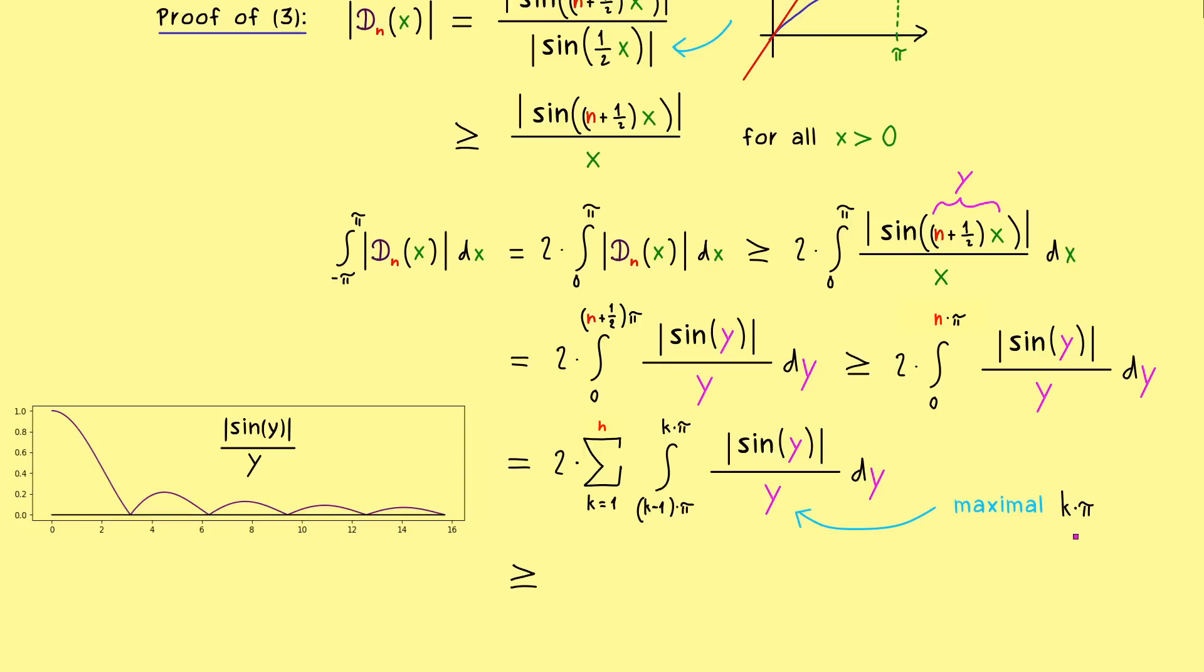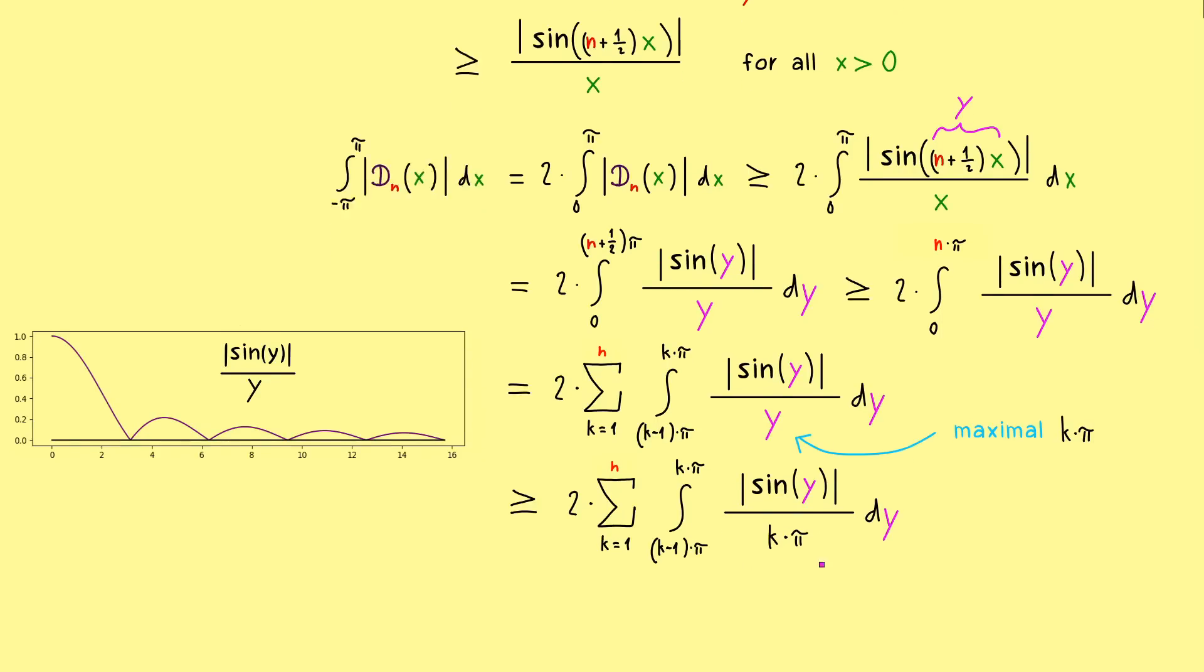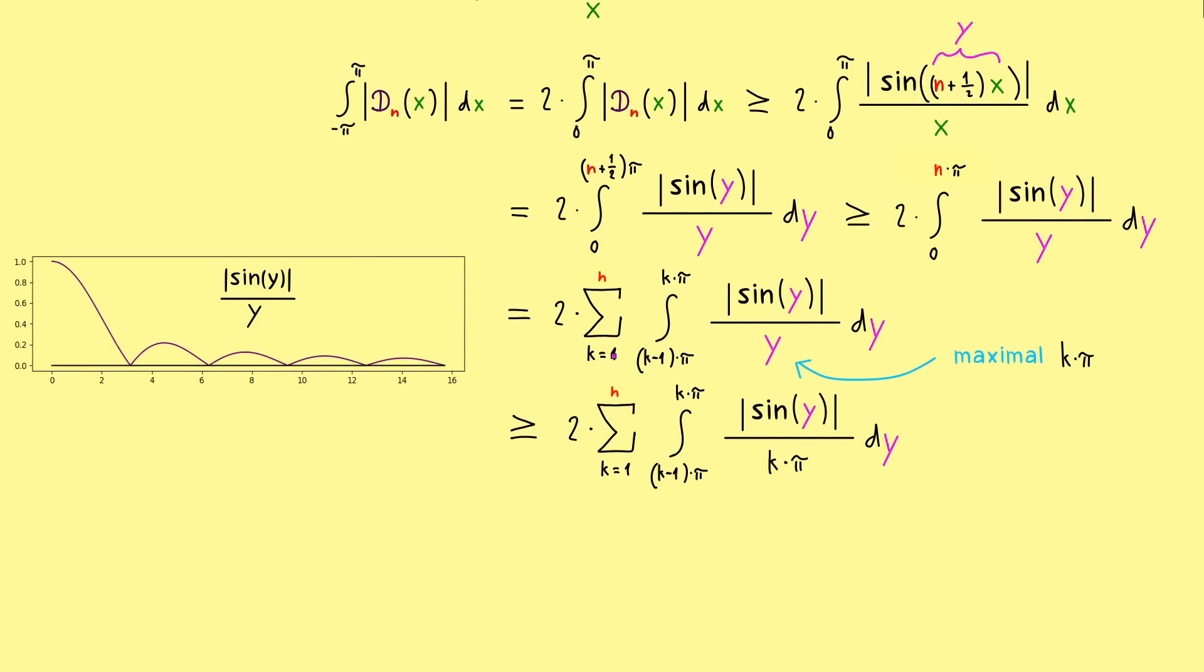So we can also pull it out, and then we just have an integral of this sine function. And since sine is 2π periodic, it does not matter what k is; we always get out the same integral, and you might know this is equal to 1.